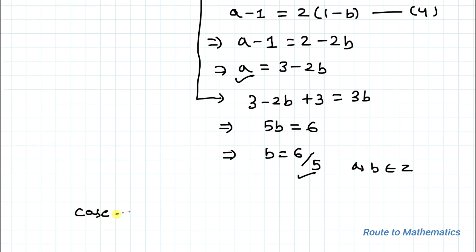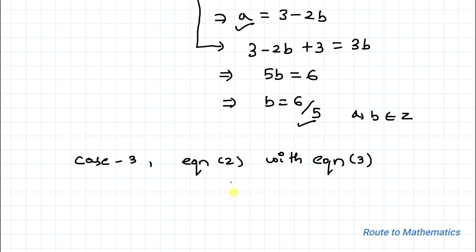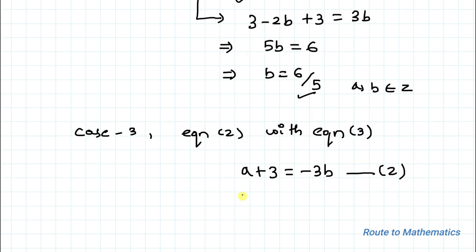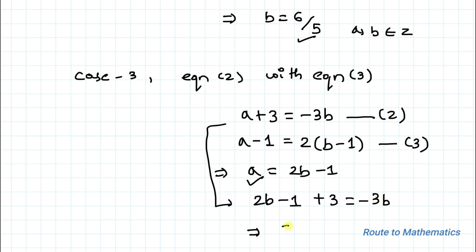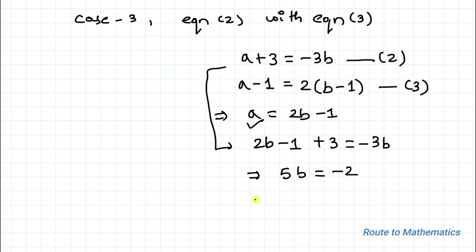In Case 3, we equate equation 2 with equation 3. Equation 2: a+3 = −3b; equation 3: a−1 = 2(b−1), which implies a = 2b−1. Substituting: 2b−1+3 = −3b, so 5b = −2, giving b = −2/5. Since b must be an integer, this solution is discarded as well.